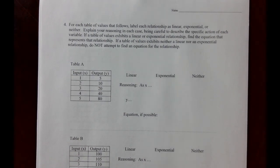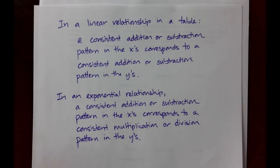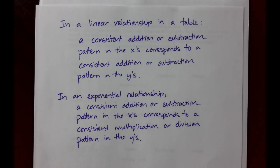Before we get rolling on the actual practice, here are some reminders. In a linear relationship in a table, we need a consistent addition or subtraction pattern in the x's that corresponds to a consistent addition or subtraction pattern in the y's that goes with the slope of a line, rise versus run. In an exponential relationship, we need a consistent addition or subtraction pattern in the x's corresponding to a consistent multiplication or division pattern in the y's.